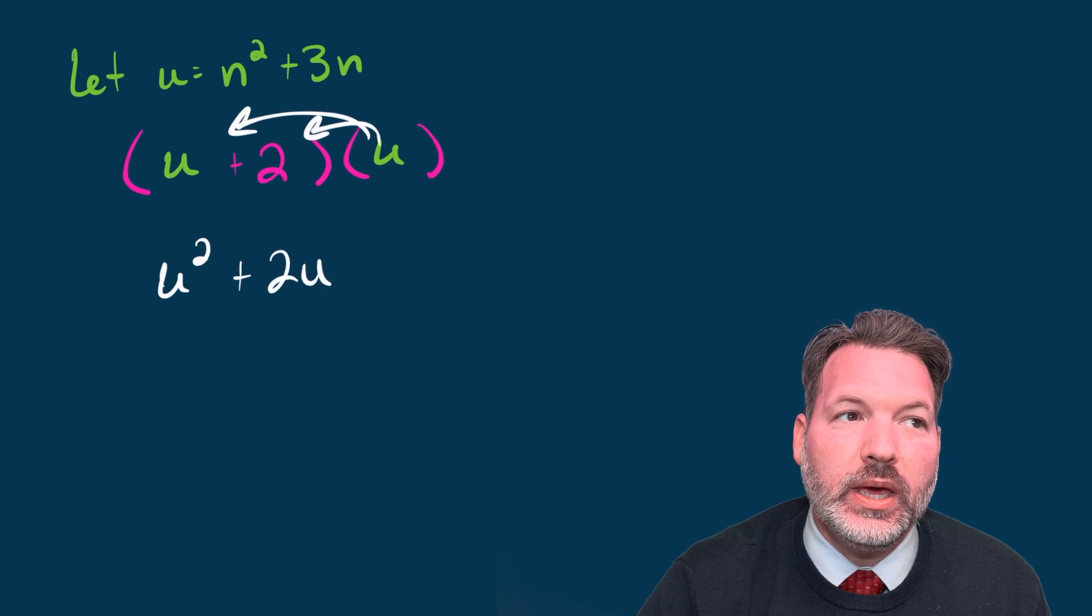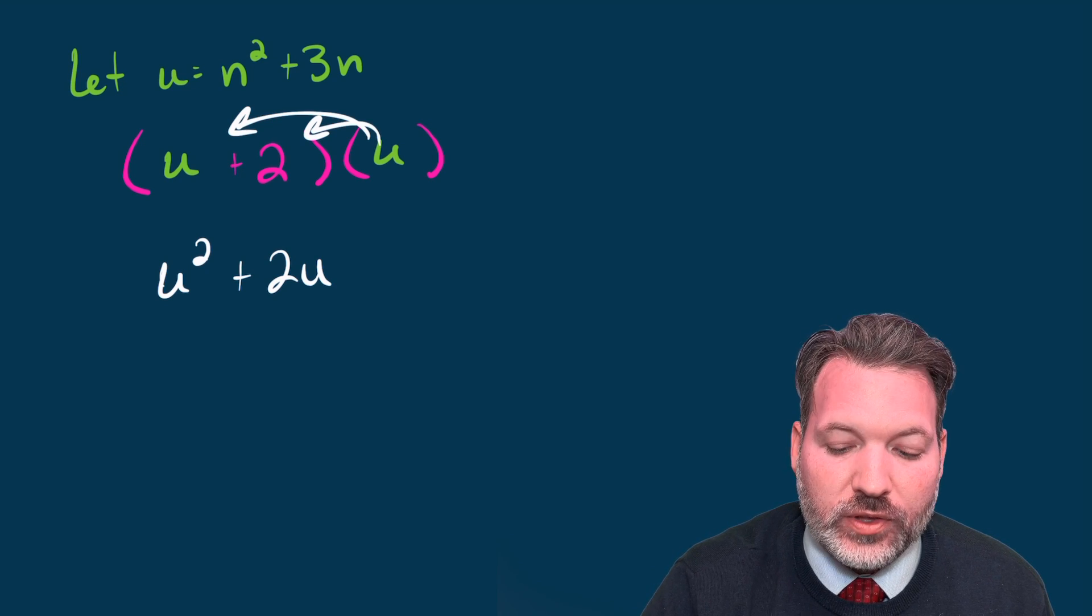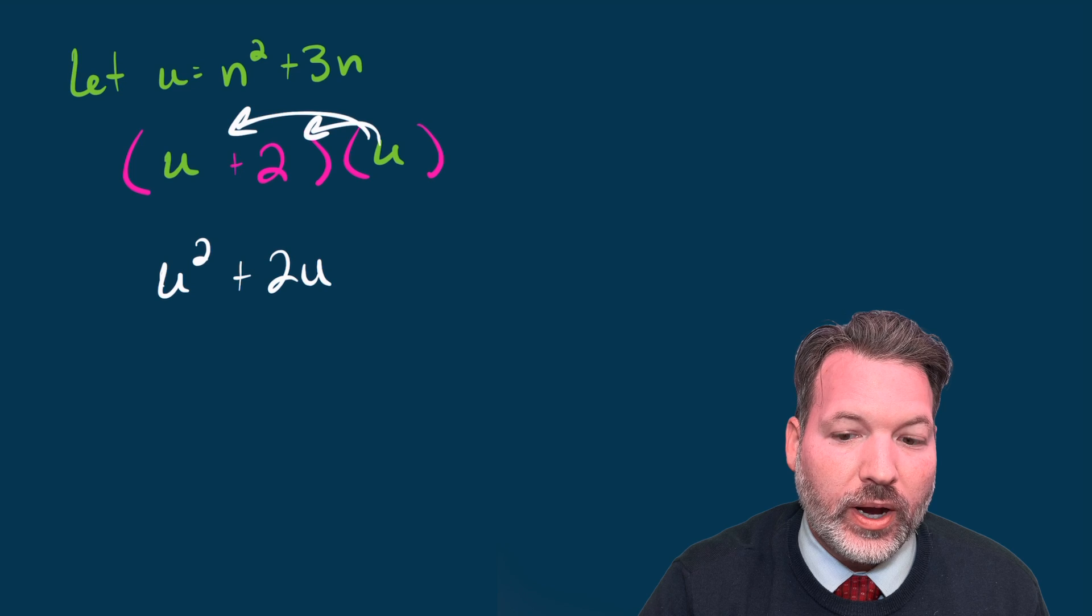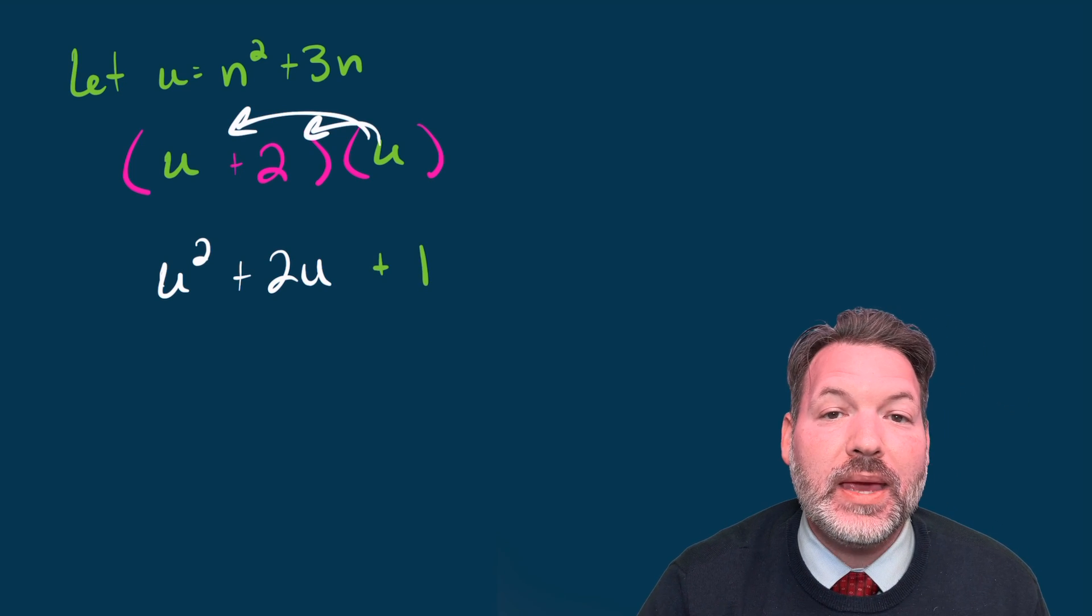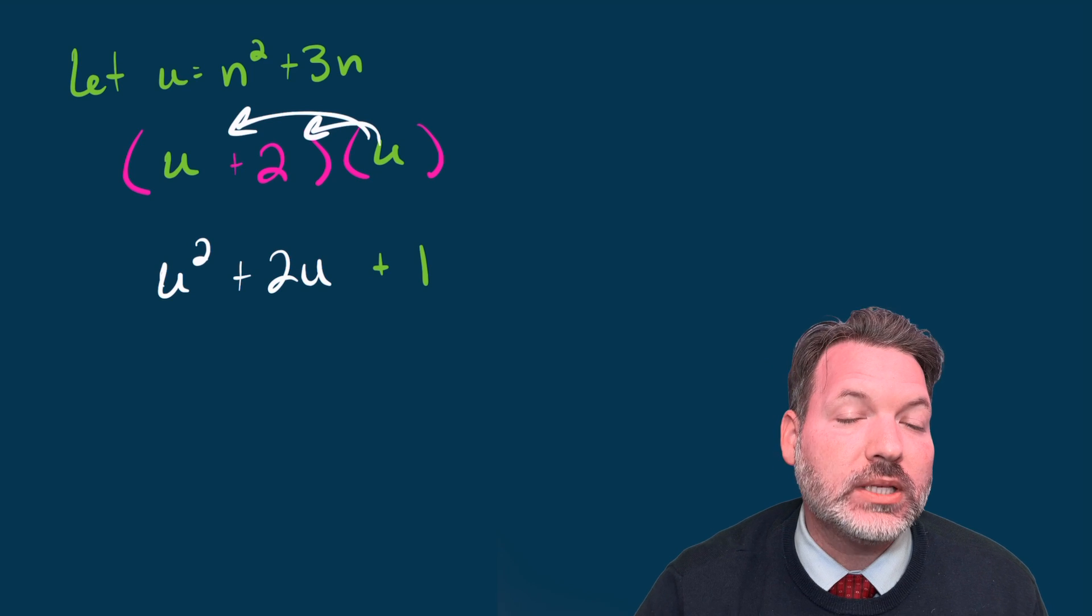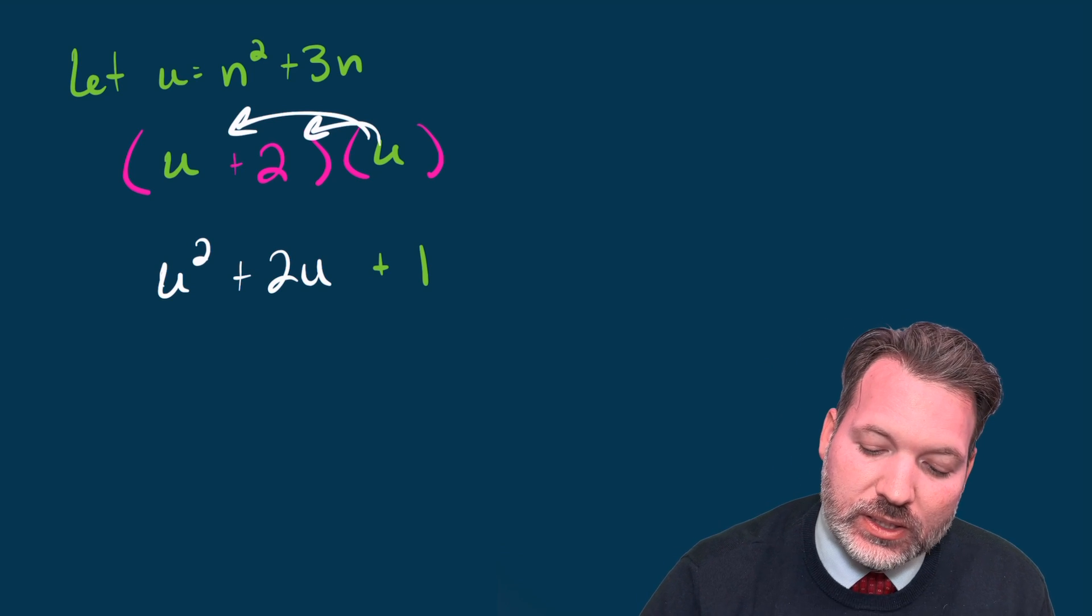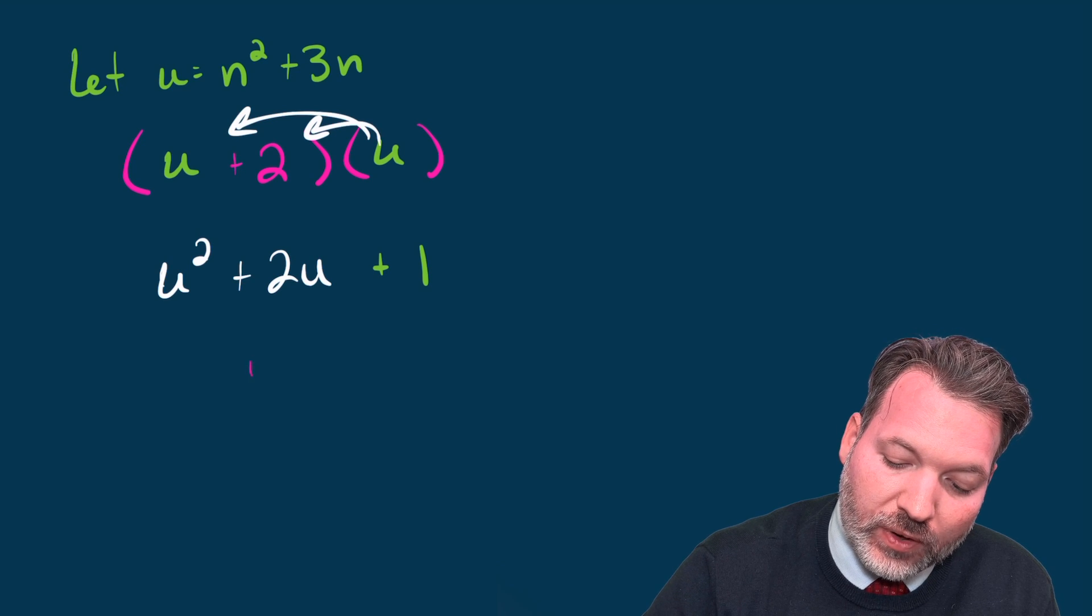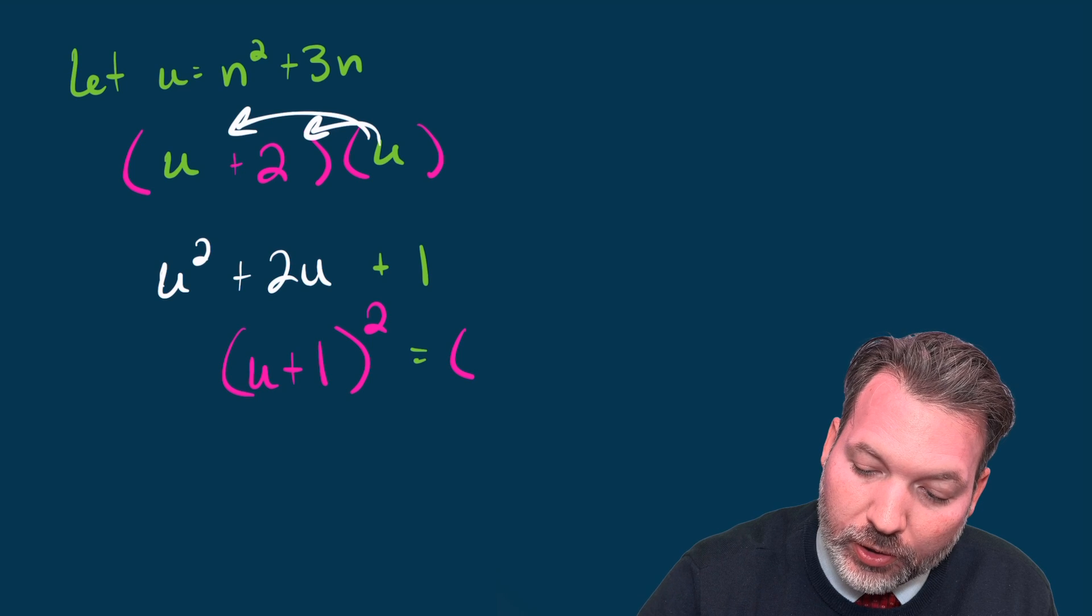Now, u squared plus two u is not a perfect square. In fact, for any integer value of u, this can't be a perfect square, because what we need to turn this into a perfect square is to make it one larger, just like we did to the four consecutive integers before. If we do this, this is now equivalent to the perfect square of u plus one.